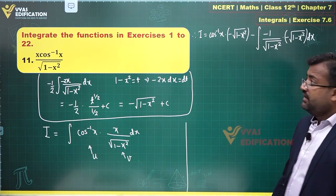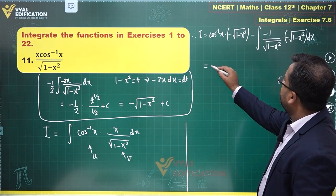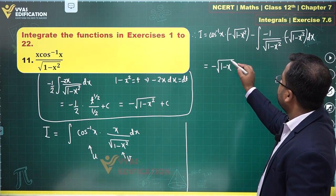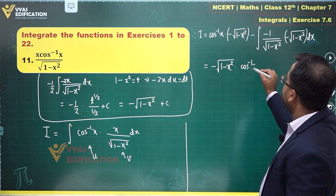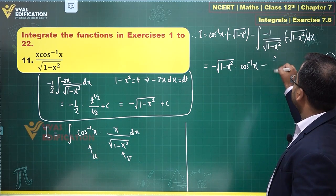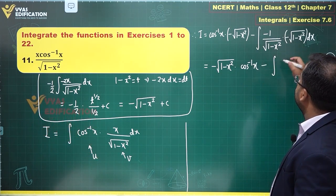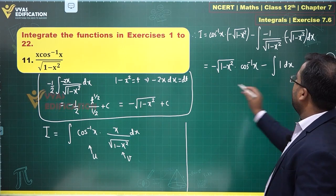This is the maha integral. And what do we have? Minus root of 1 minus x square cos inverse x and this becomes a minus integral of, this becomes plus 1 dx, x.